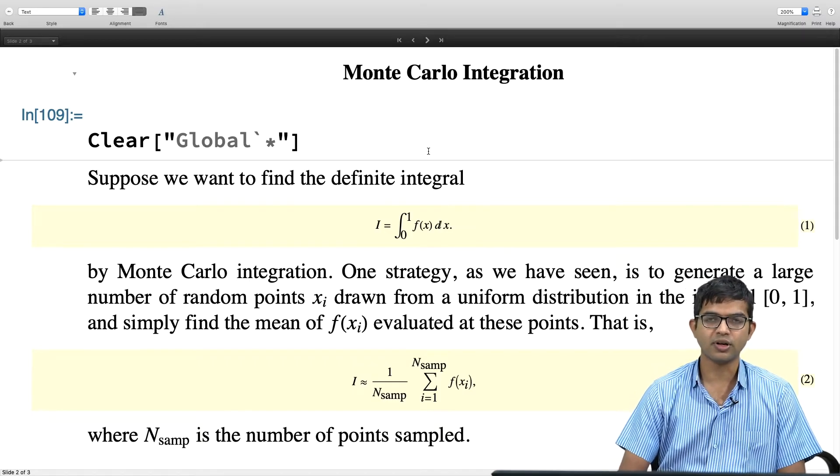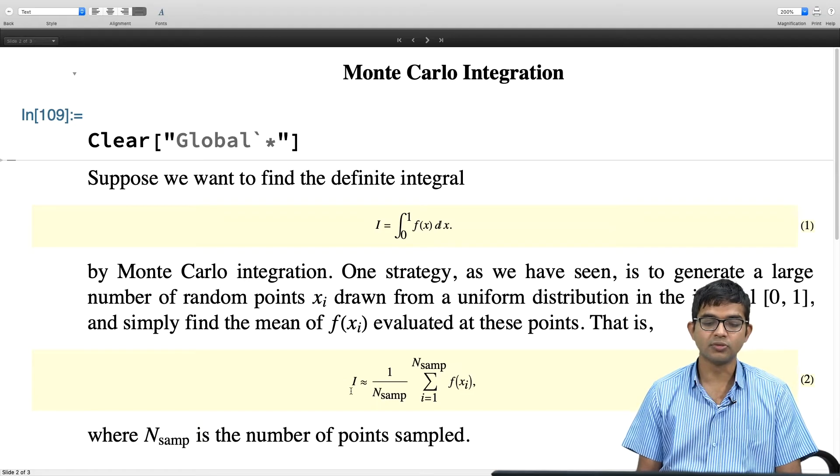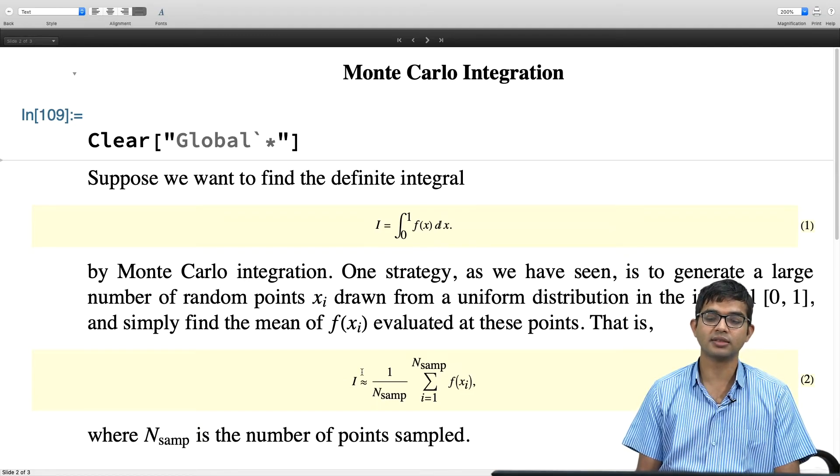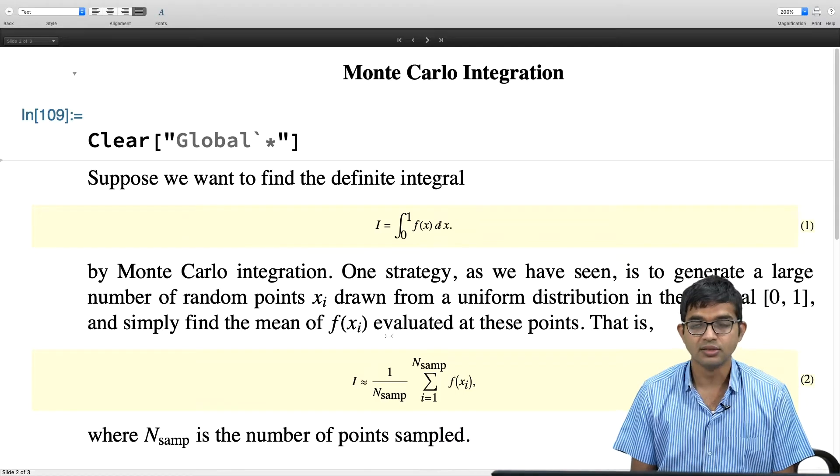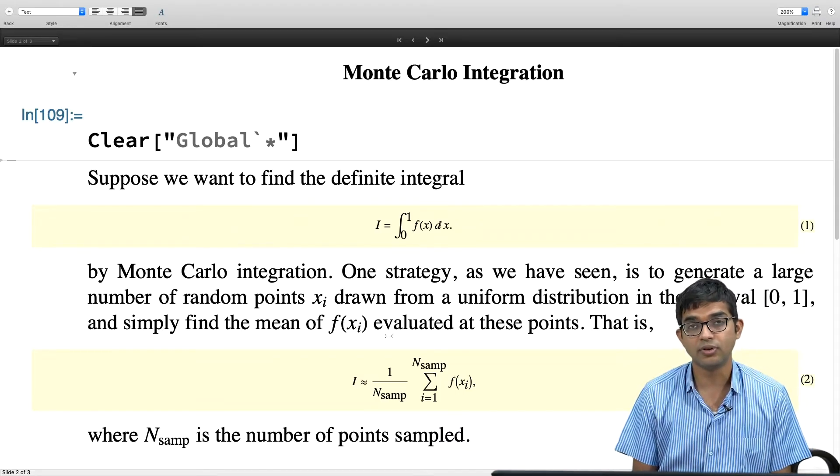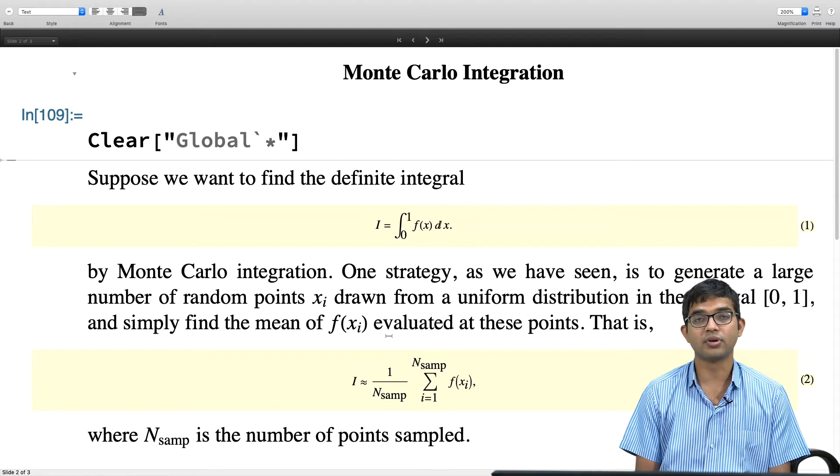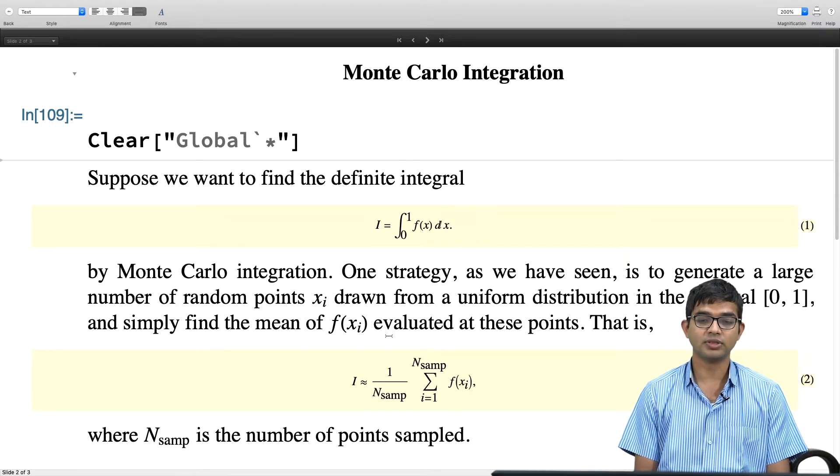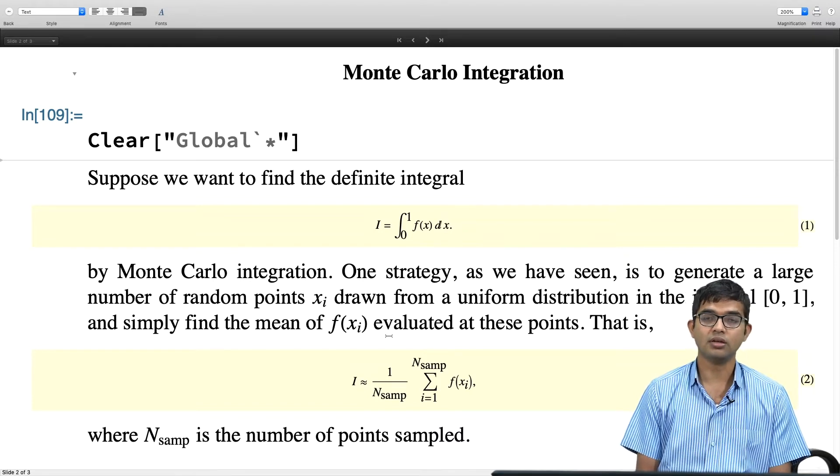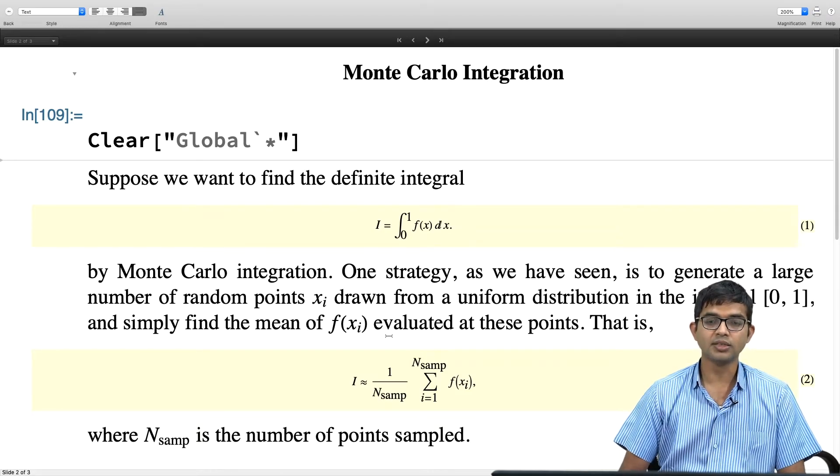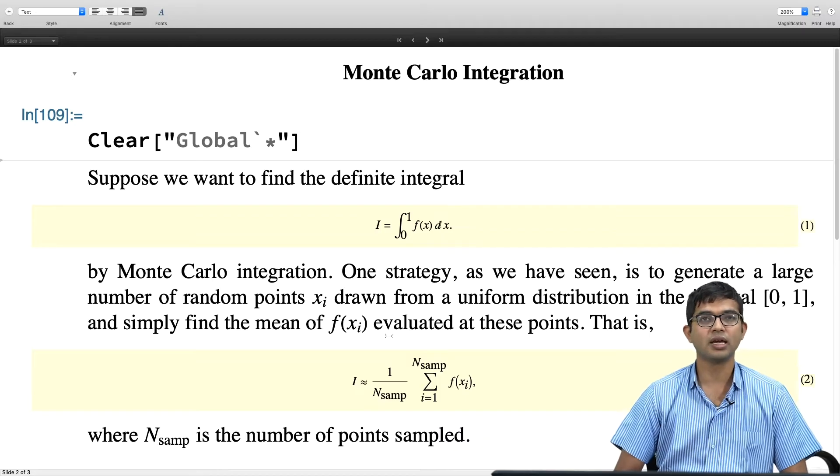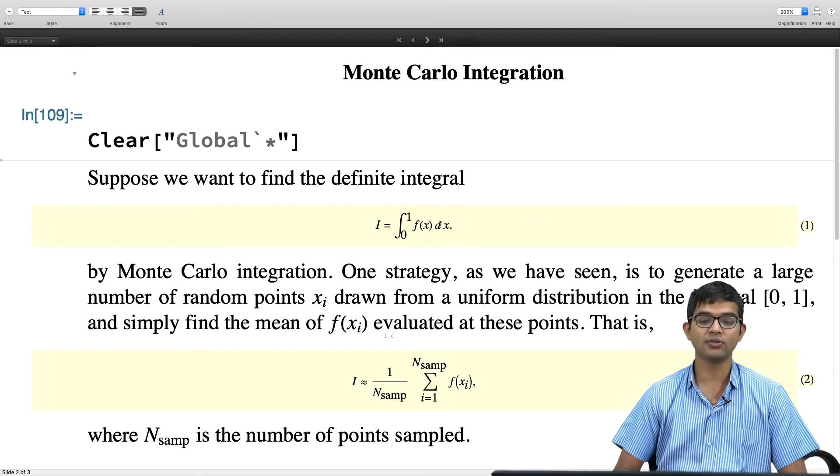The point is that this sum is going to converge to the exact integral as n_samp becomes larger and larger. We have seen that in practice, this n_samp actually does not need to be very large. Even for relatively small values of n_samp, the value of this sum will actually go to this integral. Now, is it possible to do better using some small tweaking of this method?